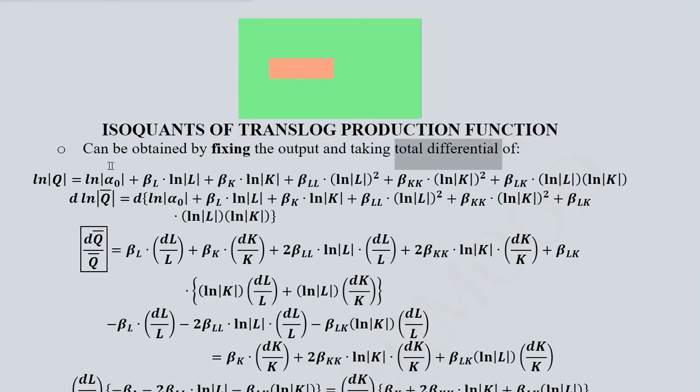Then we can take the total differential. We have a two-case input translog production function, so we have fixed output because you can see the Q now appears with a bar on it. After this bar, we are going to use this process of total differential.